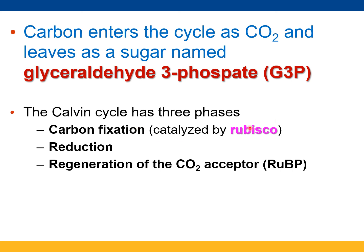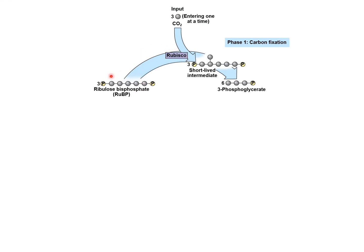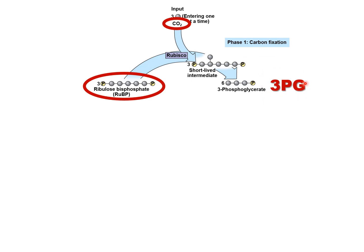We fix some carbon, use those high-energy electrons to reduce the molecule, strip off G3P in the process, and then regenerate RuBP — the molecule that we add CO₂ to using rubisco. The key enzyme is rubisco, and the three phases are fixation, reduction, and regeneration. RuBP has five carbons and a couple of phosphates — that's ribulose bisphosphate. The product of fixation is 3PG (3-phosphoglycerate), made using rubisco and carbon dioxide.